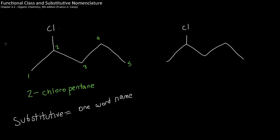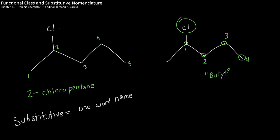Functional class naming is going to be two words. To start, you begin numbering from your halide — not from the longest carbon chain. The first thing you look at is where your halide is. You start numbering the longest carbon chain from that point. So number one starts at the halide, and we go two, three, and four along the longest carbon chain.